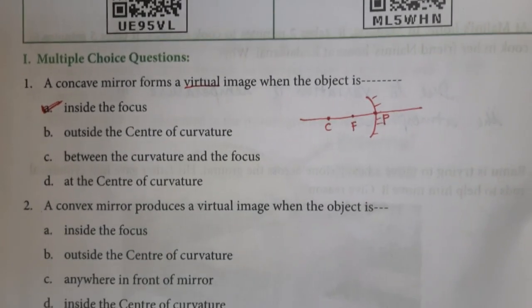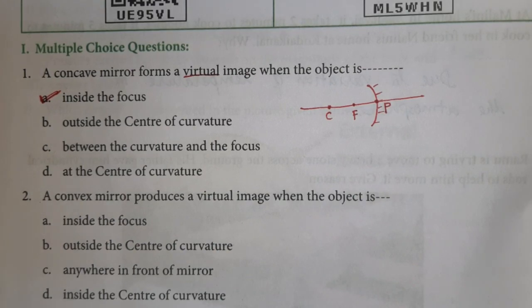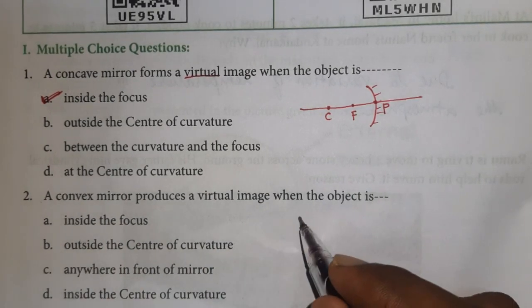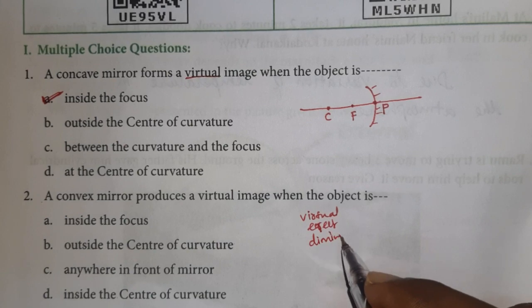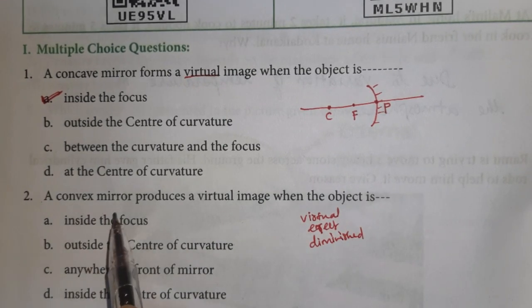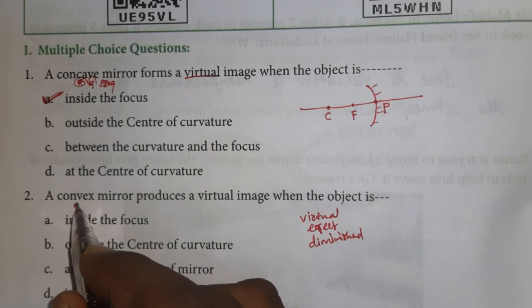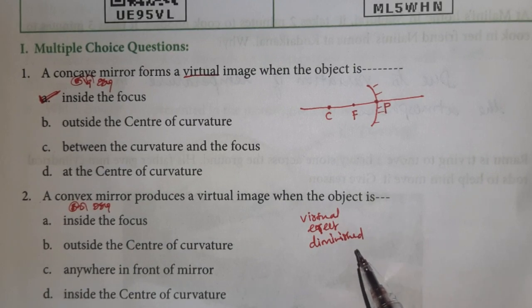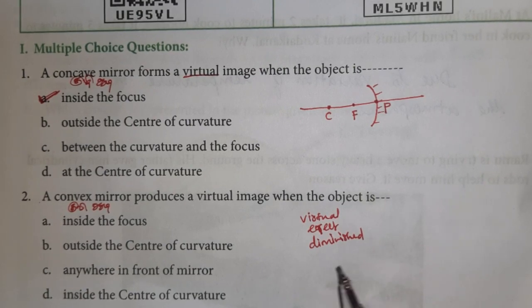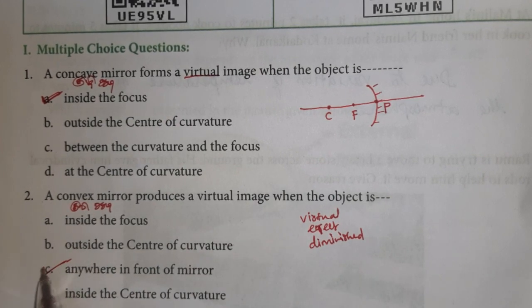Question number 2: A convex mirror produces a virtual image when the object is? Convex mirror has a special property - it always forms virtual, erect and diminished image. So this is the right answer.